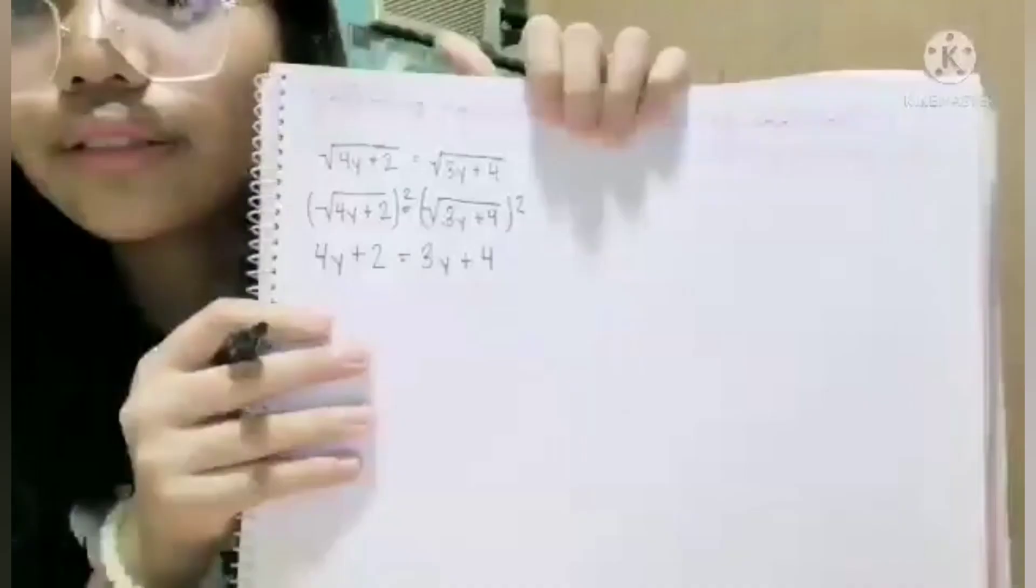So after getting the square of the two expressions, we have this. So now we can solve the equation. Now let us do the other step.